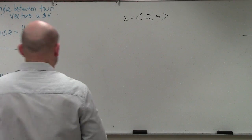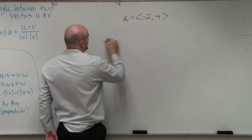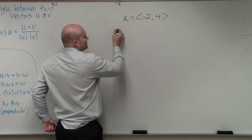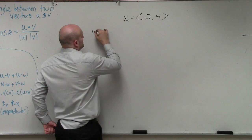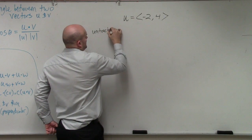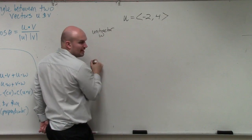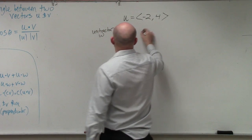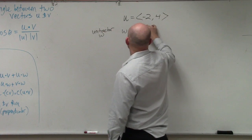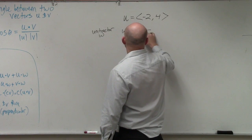Finding the unit vector, we are given a couple formulas. So the formula for the unit vector, I'm going to call the unit vector w. So the unit vector w is basically equal to the vector u divided by the magnitude of u.